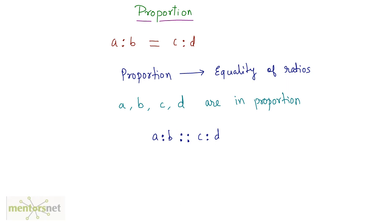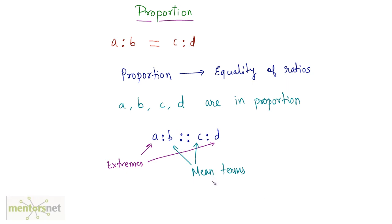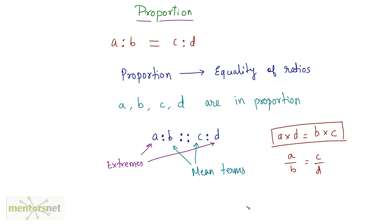The terms A and D are called extremes, and the terms inside, B and C, are the mean terms. Remember this terminology and the key property: the product of extremes is equal to the product of means. So A times D equals B times C. If you rearrange, moving B to the left and D to the right, you get A by B equal to C by D, which is the proportion. The product of extremes equals the product of means — remember this property.